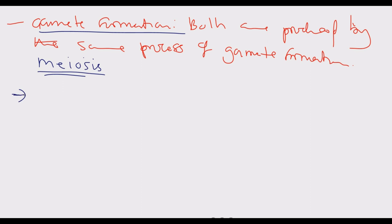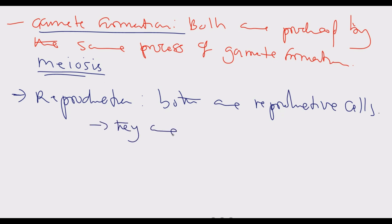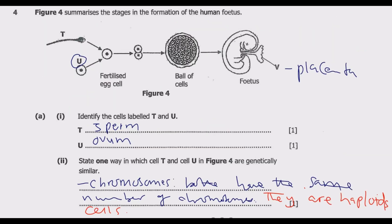A third similarity you can mention, if required to give three, is that both the sperm and the ovum are reproductive cells, meaning they are both needed for reproduction. So both are reproductive cells needed for reproduction. Once you have these points, you are good to go.